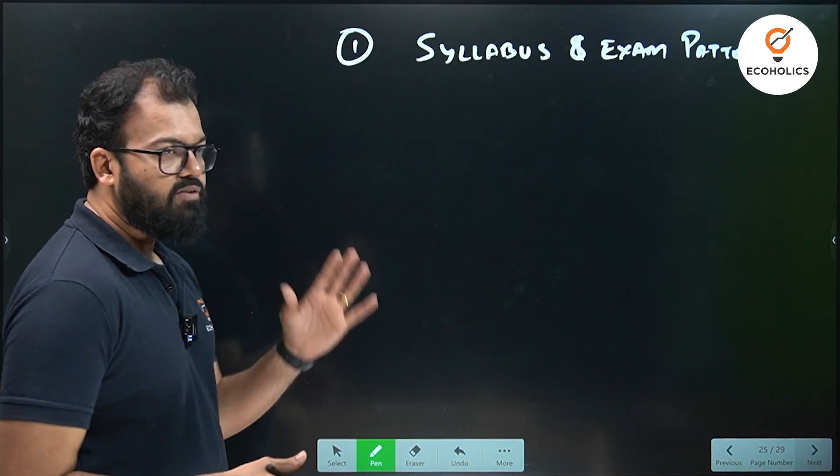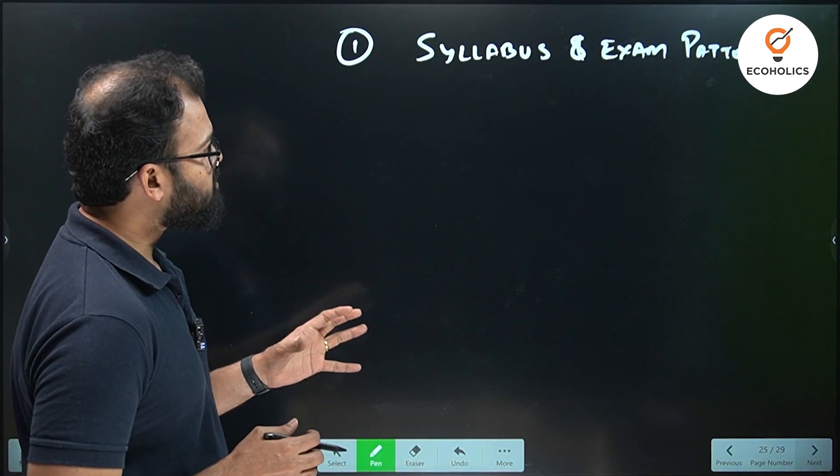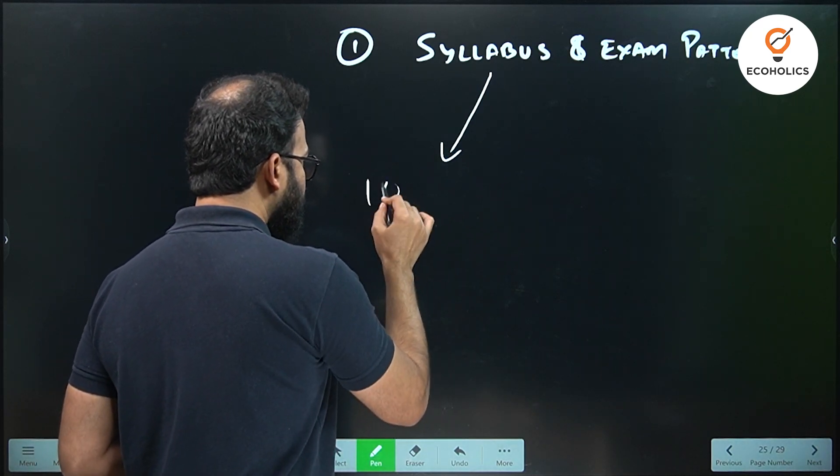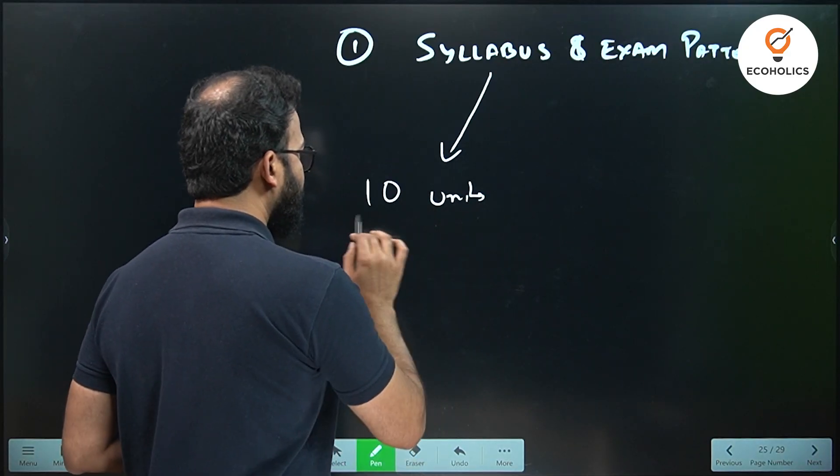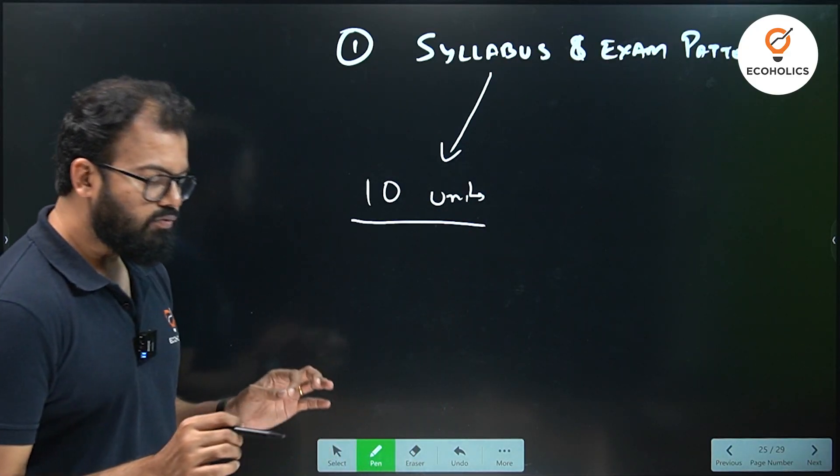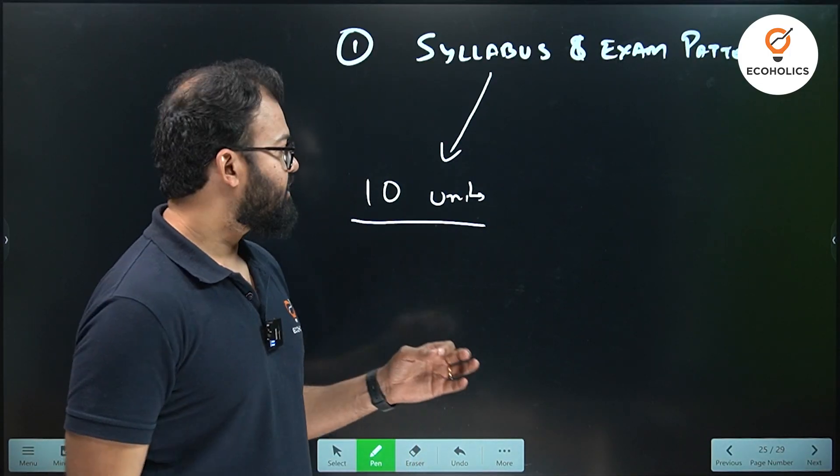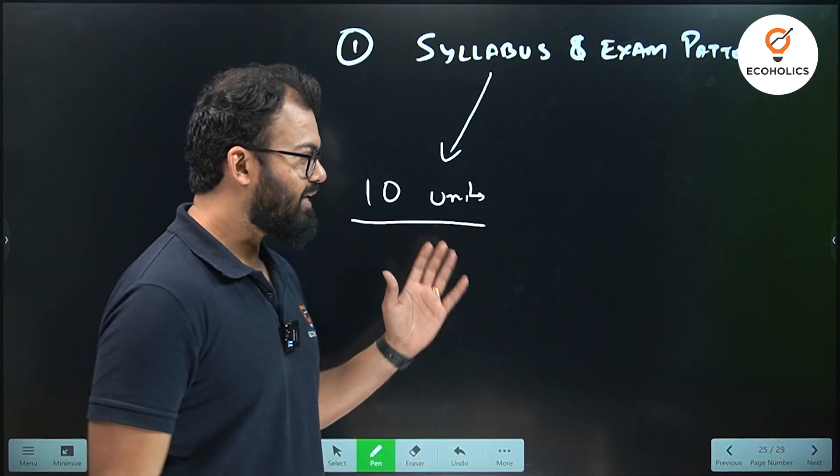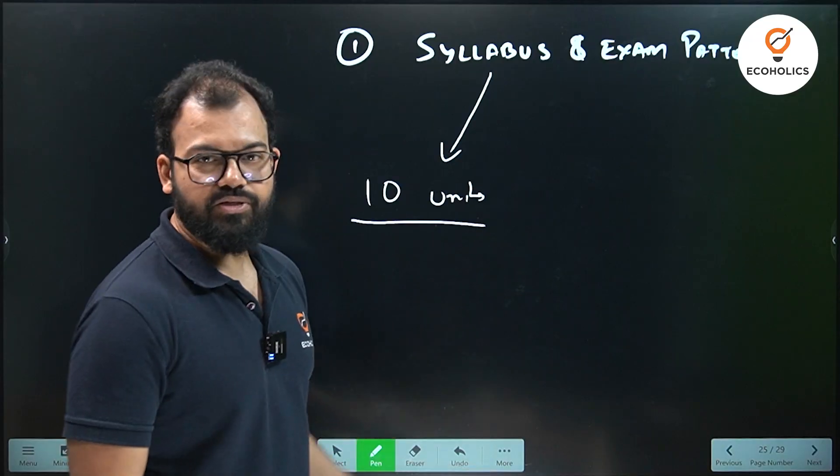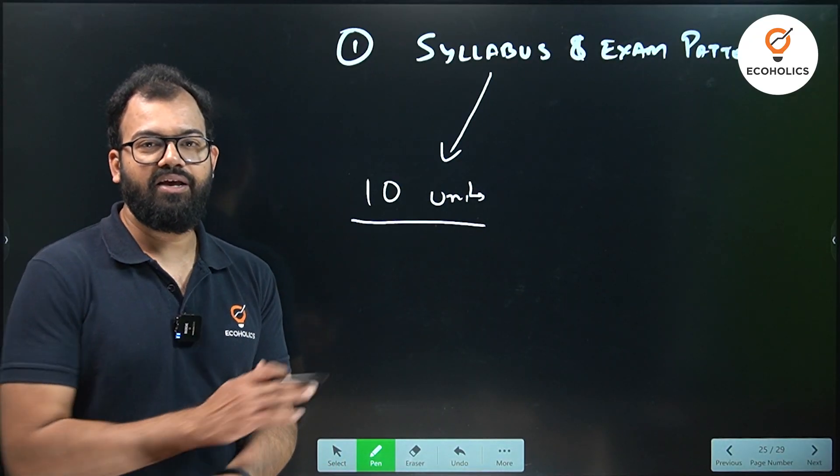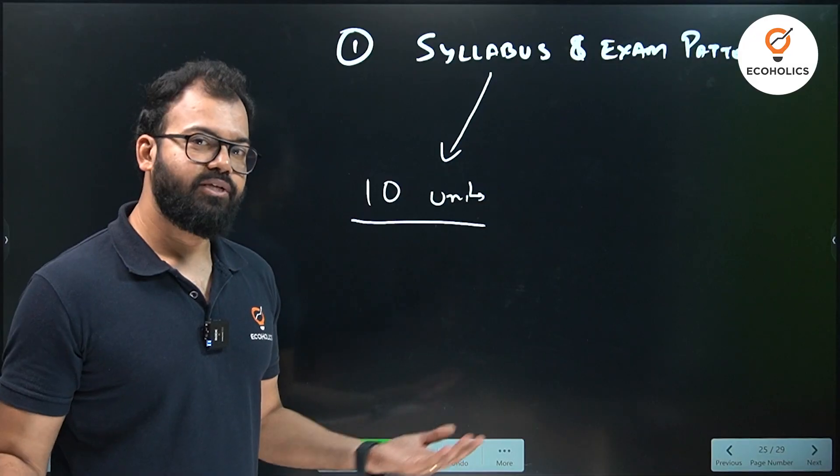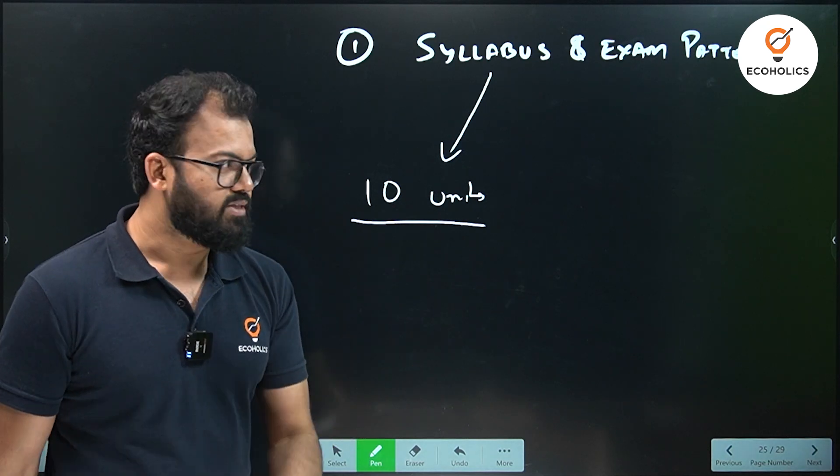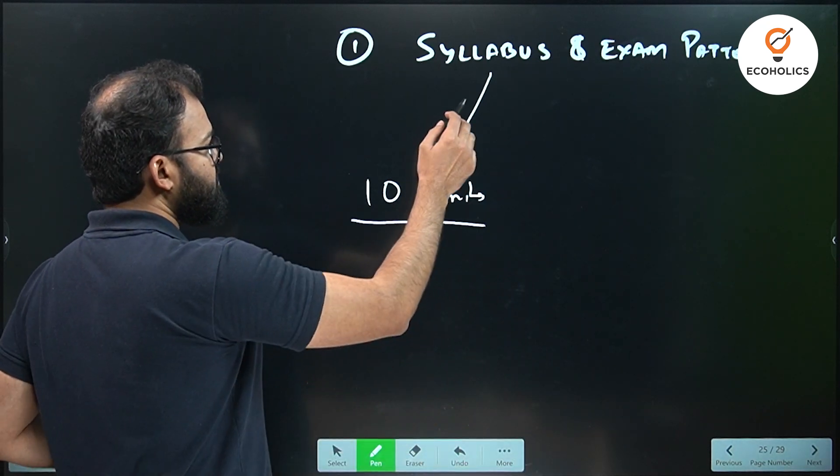Now in this video, we will discuss five important strategies. Let's come to the core area. Number one is syllabus and exam pattern. In the syllabus, UGC has given 10 units. Although if you read the notification, they have said that all units will be given equal weightage, meaning 10 units getting 100 questions is like 10 questions each. But this pattern has never been followed.